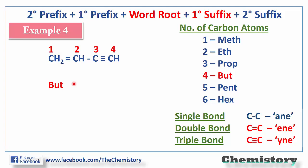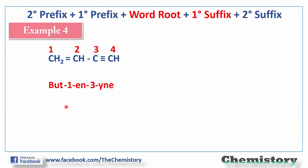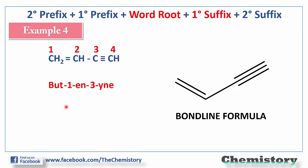However, two things to keep in mind for en-yne nomenclature: first, in en-yne, the double bond is given more priority than the triple bond, so 'en' is written first and 'yne' after. Secondly, when writing en-yne, the second 'e' of 'ene' is dropped. The double bond is on the first carbon, so it is 'one-en', and the triple bond is on the third carbon, so it is 'three-yne'. This is the bond line formula of 'but-1-en-3-yne'. If a bond line formula is given, count the number of carbons first and then check the degree of unsaturation.